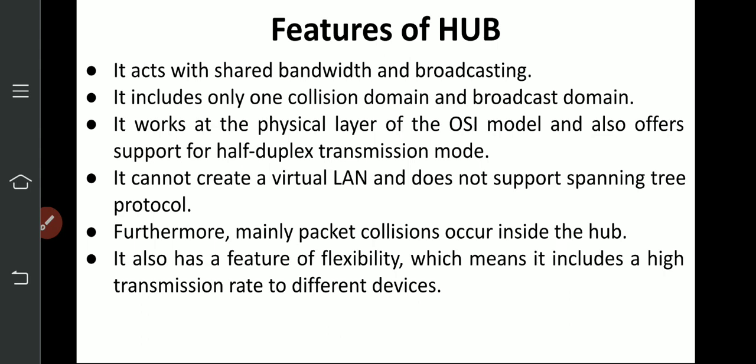Half duplex and full duplex are two different things. Half duplex uses half the bandwidth, while full duplex uses full bandwidth — meaning two channels can work simultaneously across the full bandwidth. Hub cannot create a virtual LAN and does not support the spanning tree protocol. Tree protocol is a hierarchical topology that hub does not support. Hub supports star topology.